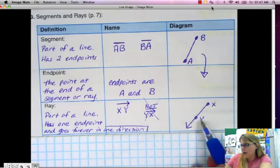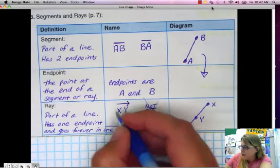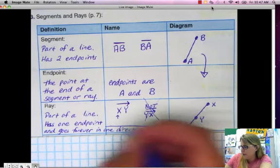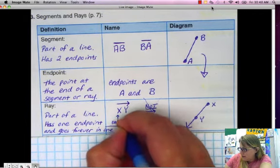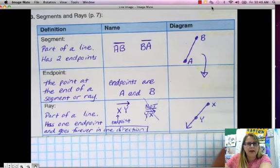Because this first point here has to be the endpoint of the ray. It has to be otherwise it's not named correctly.